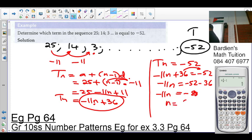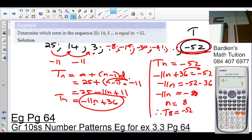Therefore, T8 equals negative 52. What does that mean? That means to say if I extend this: 25, then term 4 minus 11 gives negative 8, minus 11 gives negative 19, minus 11 gives negative 30, minus 11 gives negative 41, minus 11 gives negative 52. Let's count: 1, 2, 3, 4, 5, 6, 7, 8. Yes, it checks out.